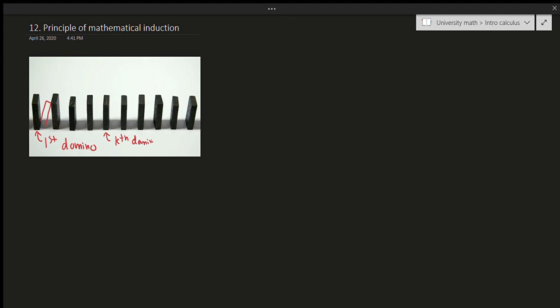Now assume that the k-th domino falls — so this is the k-th domino. Assume this falls. We are now assuming that the k-th domino falls. So if the k-th domino falls, then the k-th plus first domino — which is this one right there, this is the k+1-th domino — must fall as well. So if the k-th domino falls, then the k+1-th domino falls as well. So what can we conclude? All the dominoes will fall.